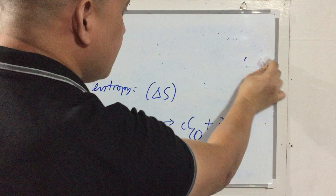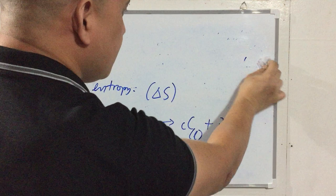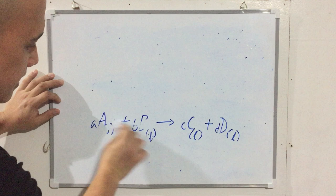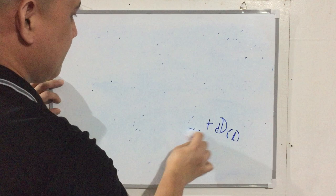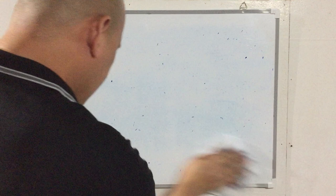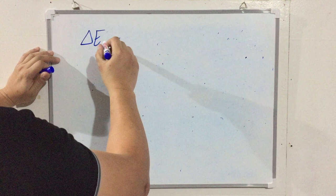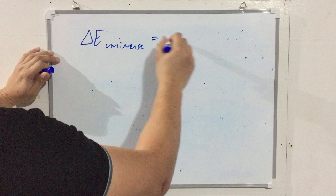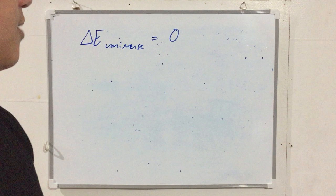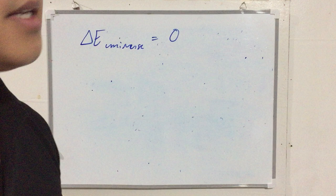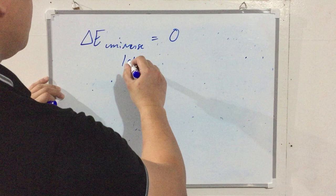So why do we study entropy? Recall that for internal energy, the First Law states that the total energy of the universe is constant — ΔE_universe equals zero. There is no total change in energy. But this doesn't tell us whether a process would occur spontaneously.